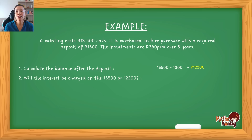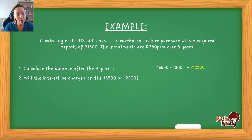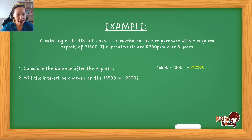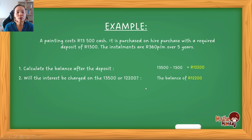Next question: will the interest be charged on R13,500 or on R12,200? Remember, you can't be charged interest on something you've already paid. So you won't be charged interest on the entire amount — you're only going to be charged interest on the balance. The answer is: interest will be charged on the balance of R12,200.